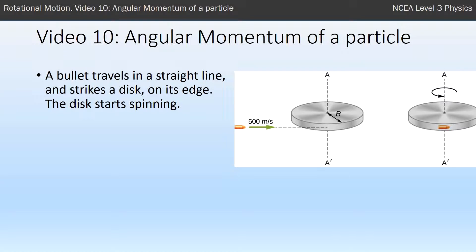In the diagram to the right we have a bullet traveling in a straight line. It strikes a disc on its edge and that causes the disc to start spinning.